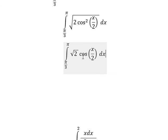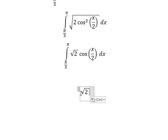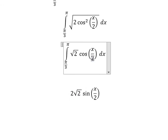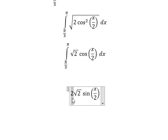Now the integration of cosine(x over 2): we have number 2 times sine(x over 2), because 1 over 2 is the coefficient of x. When we do this integration, we need 1 divided by the coefficient of x, that's 1 divided by 1 over 2, which gives us 2.